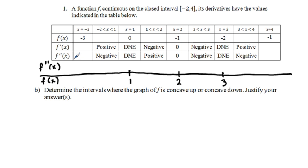Between negative 2 and 1, f double prime of x is negative, so that's going to be concave down. Between x equals 1 and x equals 2, we have f double prime of x is positive, so we have concave up. Between x equals 2 and x equals 3, we have f double prime of x negative, so we have concave down. And between 3 and 4, we have f double prime of x negative, so we have concave down again.